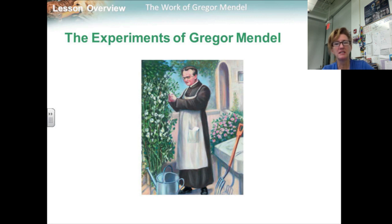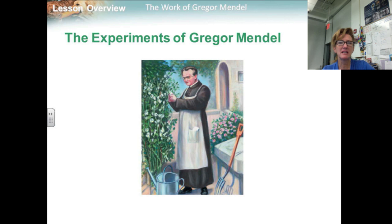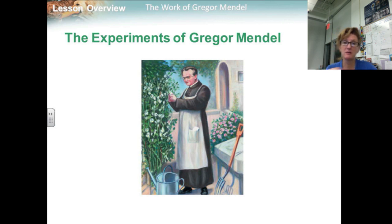Today we call peas a model system — an example of a model system for studying genetics. Scientists use model systems because they are convenient to study and may tell us how other organisms, including humans, actually function. By using peas, Mendel was able to carry out, in just one or two growing seasons, experiments that would have been impossible to do with humans and would have taken decades, if not centuries, to do with other animals.